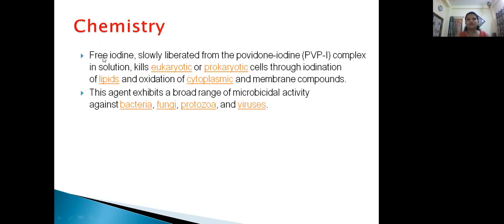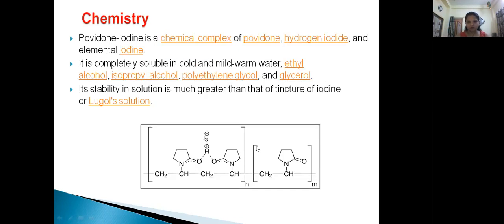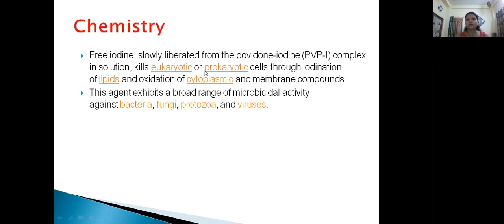Free iodine is slowly liberated from the Povidone Iodine (PVI) complex in solution. When we dissolve the structure in water, the iodine is liberated. It kills eukaryotic or prokaryotic cells through iodination of lipids — the cell has macromolecules: lipids, proteins, and carbohydrates. A lipid group of iodine atoms is attached through oxidation of cytoplasmic and membrane compounds.